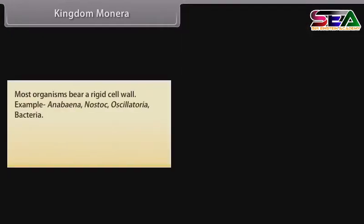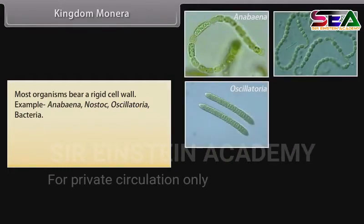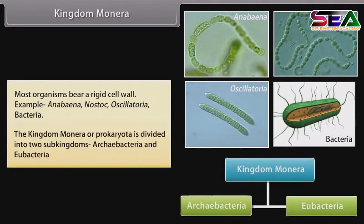Most organisms bear a rigid cell wall. Examples include Anabaena, Nostoc, Oscillatoria, and Bacteria. The kingdom Monera, or Prokaryota, is divided into two sub-kingdoms: Archaebacteria and Eubacteria.